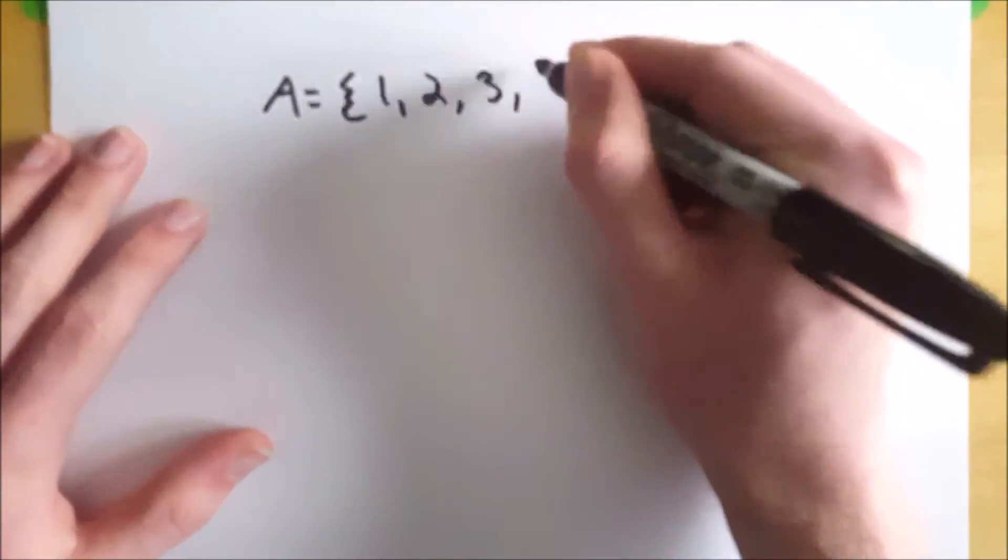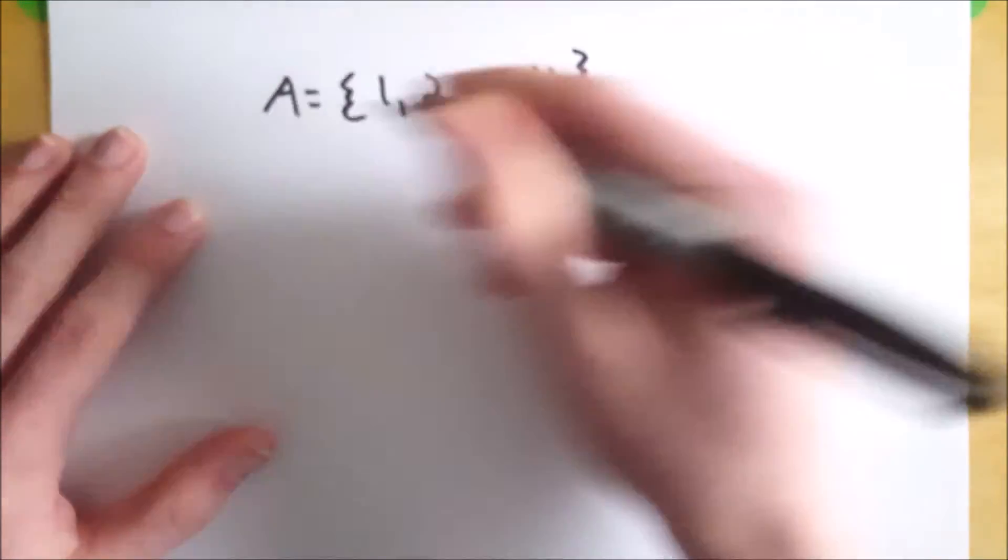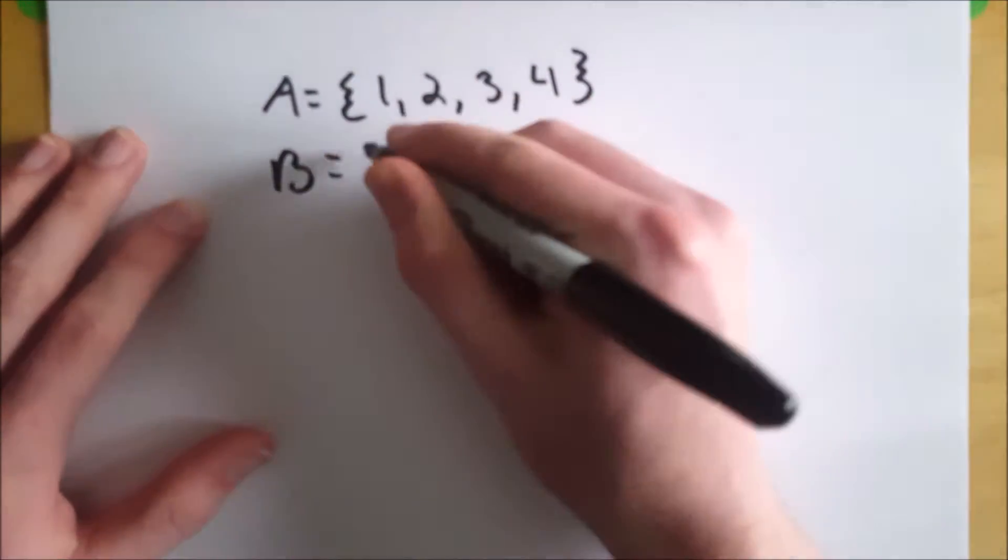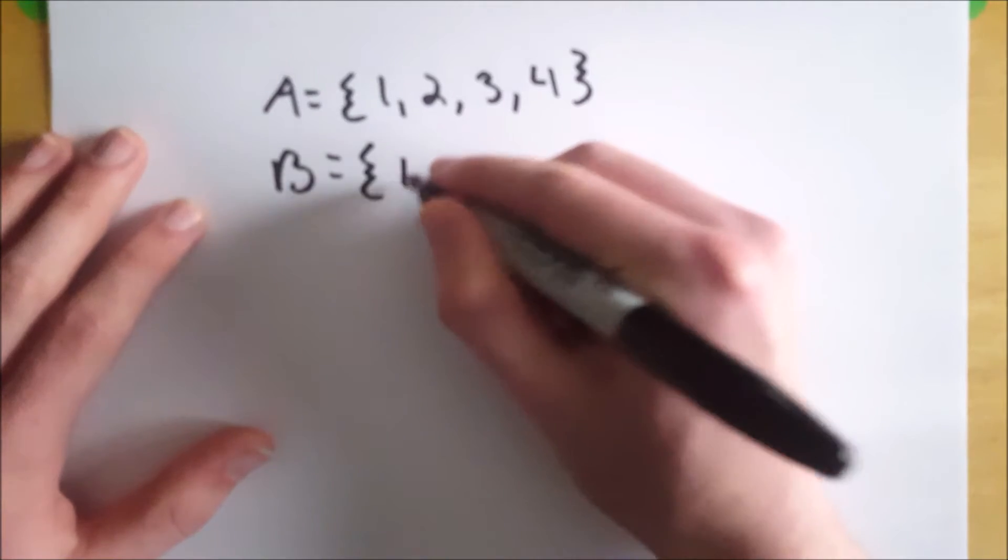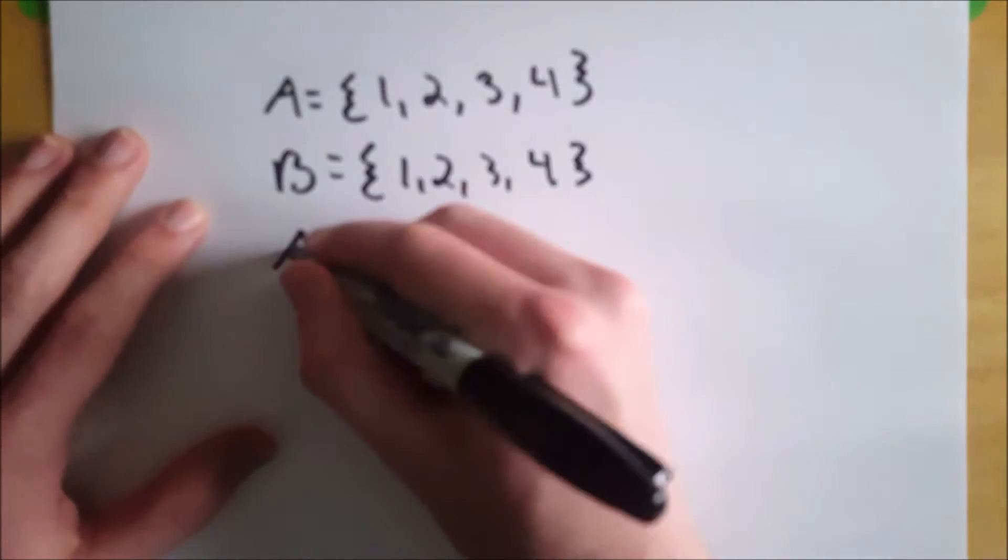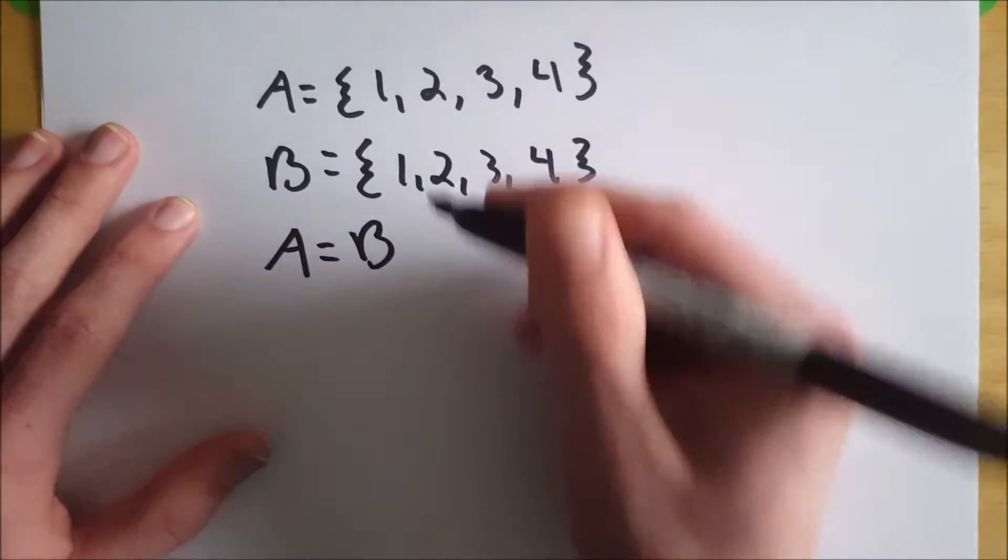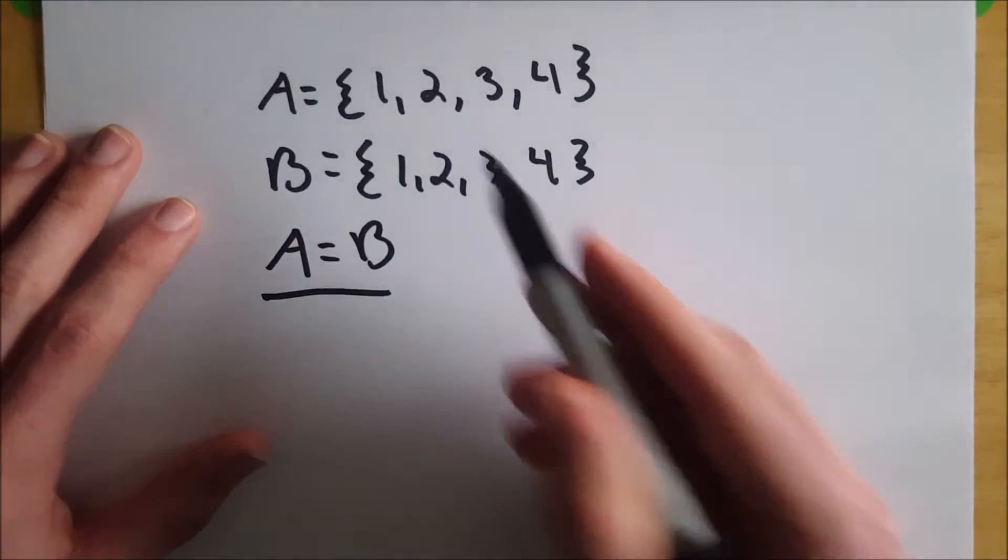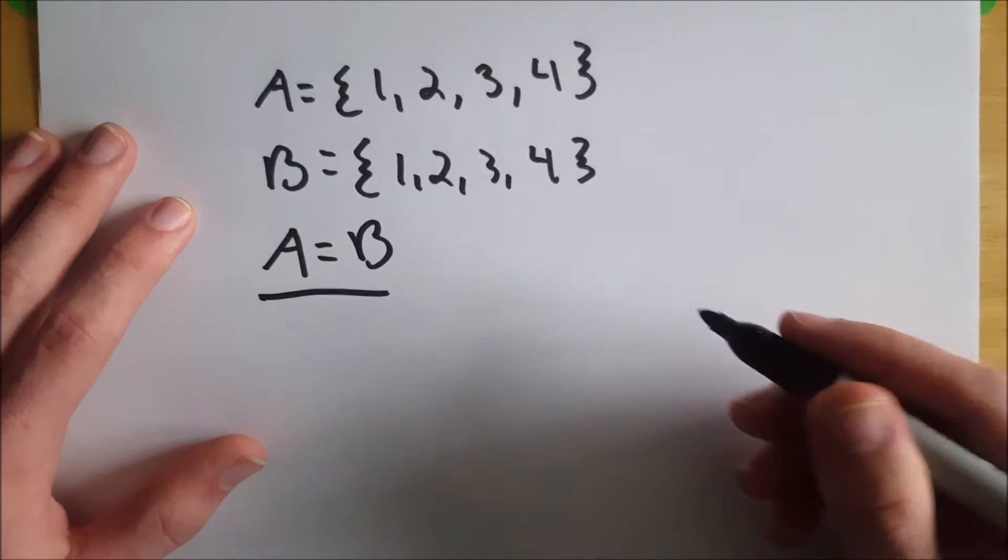So let's say we have set A that contains 1, 2, 3, and 4. And then set B contains 1, 2, 3, and 4 as well. Then we can say that A and B are equal sets, so A equals B, because they have exactly the same elements.